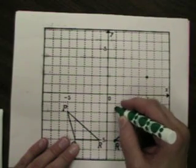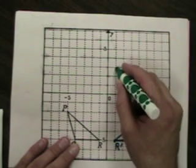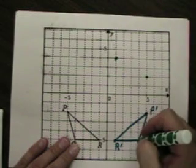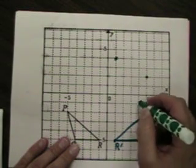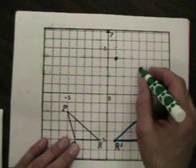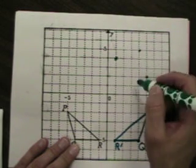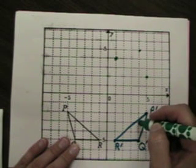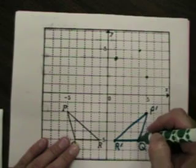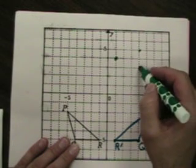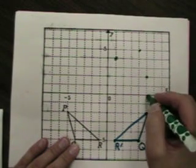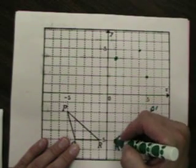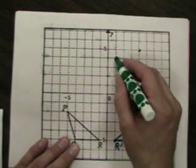This one is 1, 2, 3, 4. 1, 2, 3, 4. And this one is 1, 2, 3, 4, 5. 1, 2, 3, 4, 5. Let me check. That doesn't look right. Let me check something here. Count it from the x-axis. 1, 2, 3, 4, 5. 1, 2, 3, 4, 5. That's right. This one's 1, 2. 1, 2. This one should be 1, 2, 3, 4, 5. 1, 2, 3, 4, 5. There's the problem.